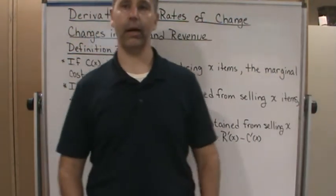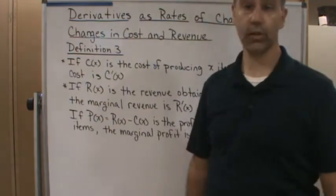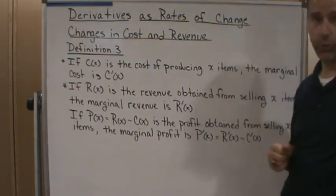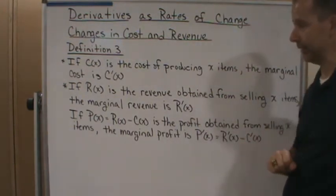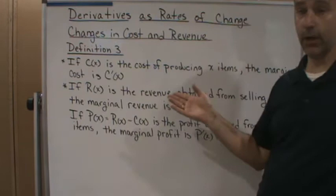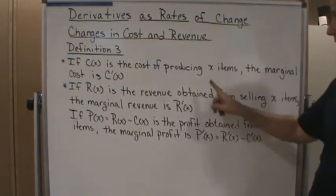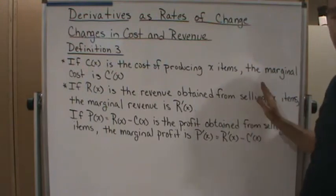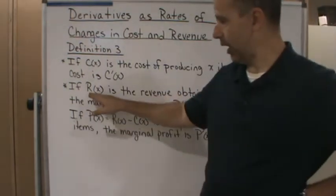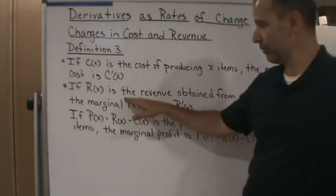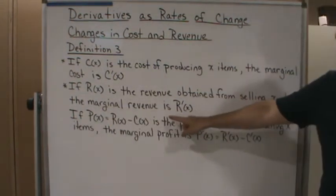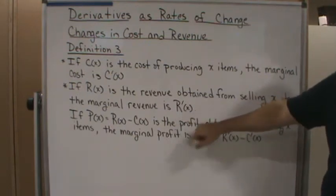Welcome back. Let's talk about changes in cost and revenue — definition number three. If C(x) is the cost function and represents the cost of producing x items, then the marginal cost is C'(x). Also, if R(x) is the revenue function and represents the revenue obtained from selling x items, then the marginal revenue is R'(x).